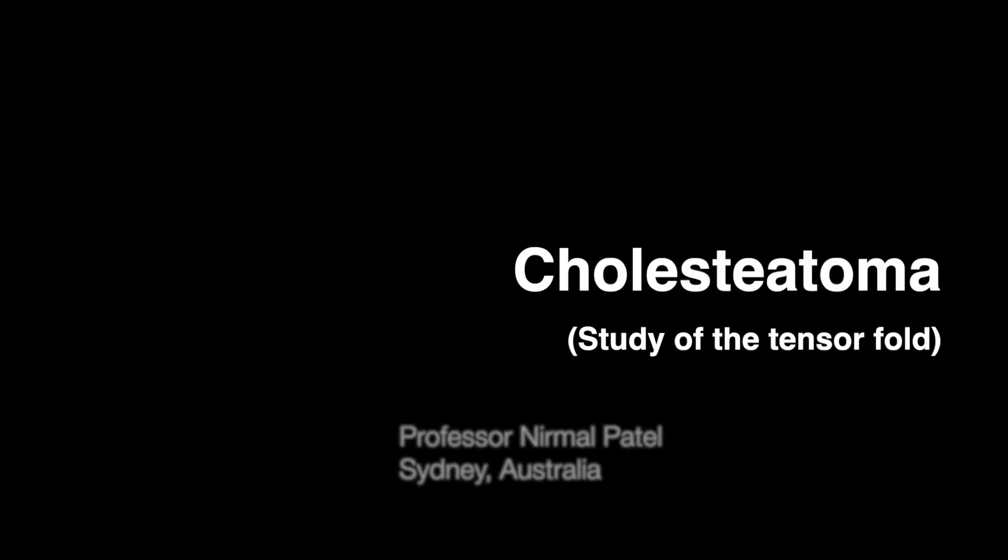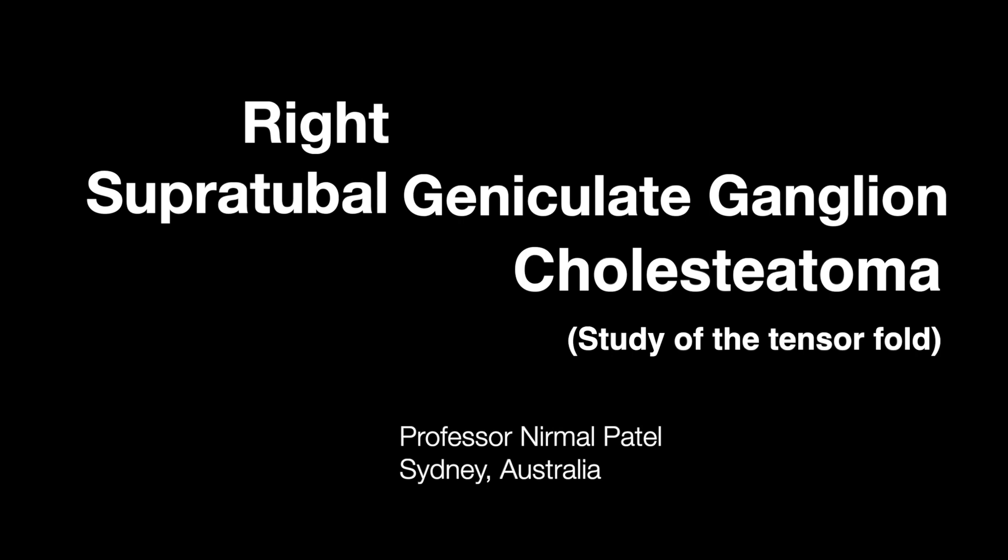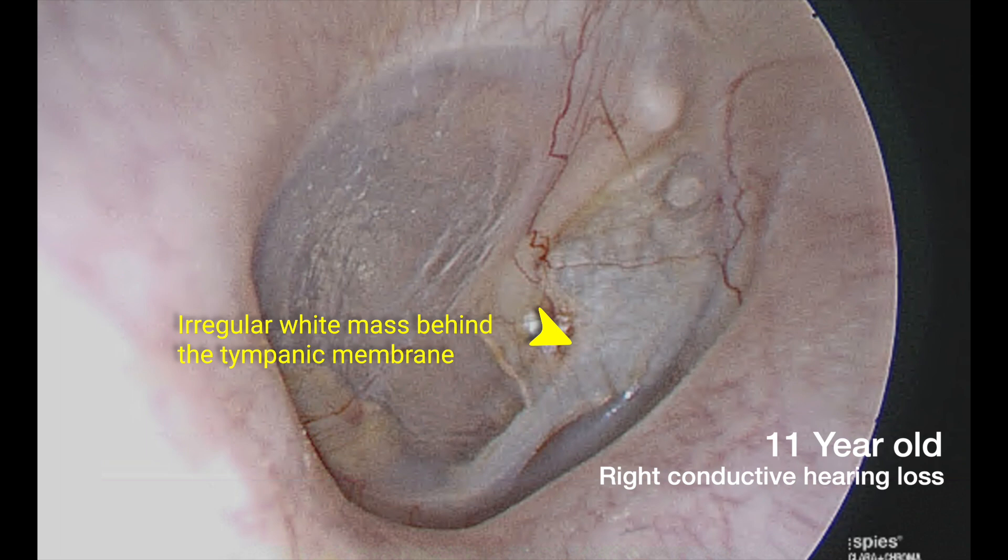Hi everyone. Here we study the tensor fold using an example of a super tubal cholesteatoma. This 11-year-old child presented with a right conductive hearing loss and a lesion noted in the anterior superior aspect of the tympanic membrane with some extension posterior inferiorly.